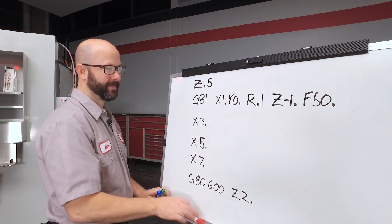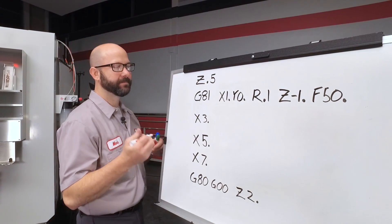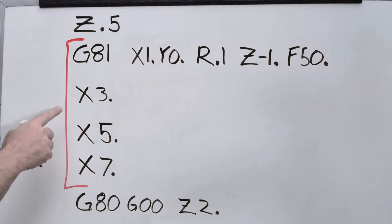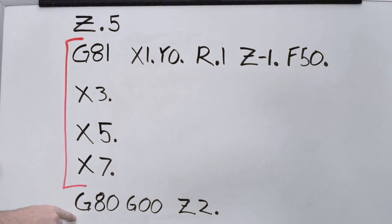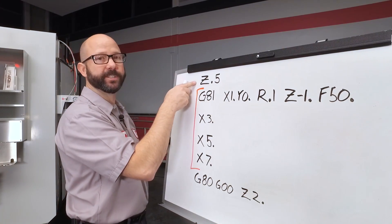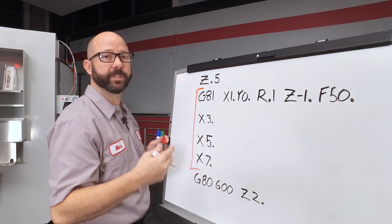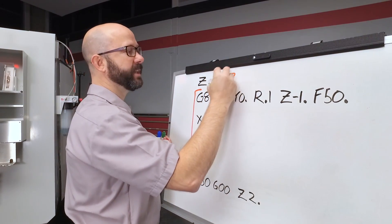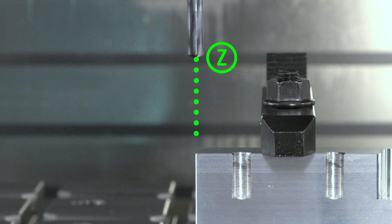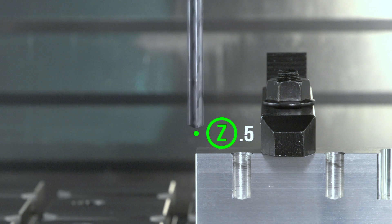Well, here's our program. Now, our canned cycle starts with our G81 line and goes all the way until we cancel it with the G80. Just prior to our canned cycle, we positioned our Z axis. Now, the control is going to store that value as our Z starting position. Just lock that value in your memory for a minute. We'll come right back to it.